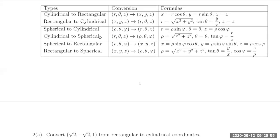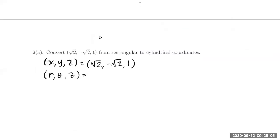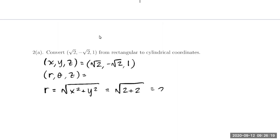Looking back at the table, r is the square root of x squared plus y squared. So r is the positive square root of x squared plus y squared, which is the square root of 2 plus 2, equaling 2. I'll fill that in for my r coordinate. Next we need to find theta.